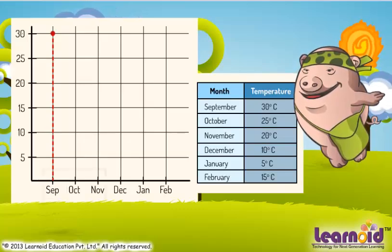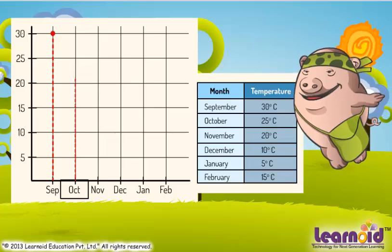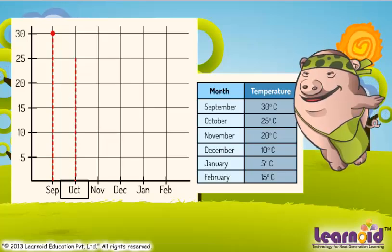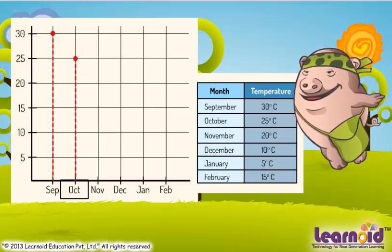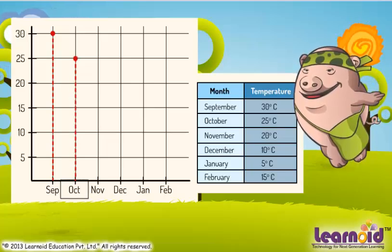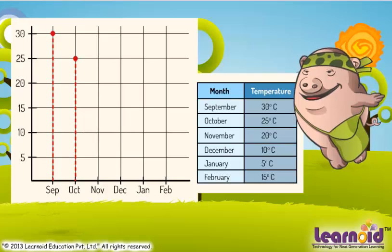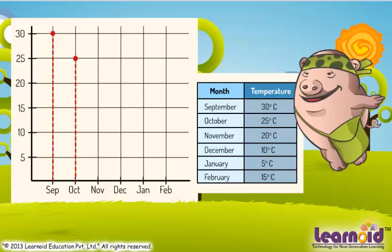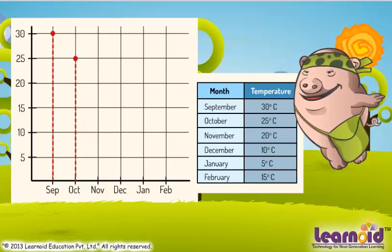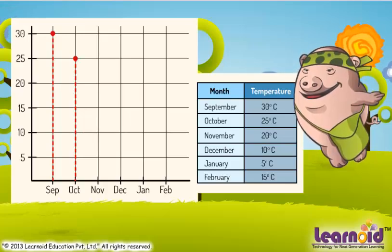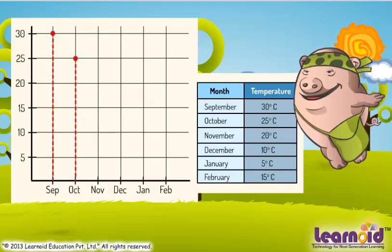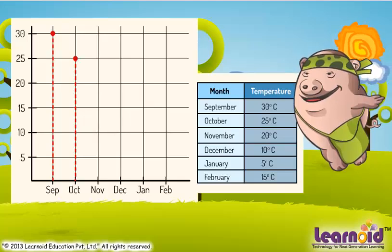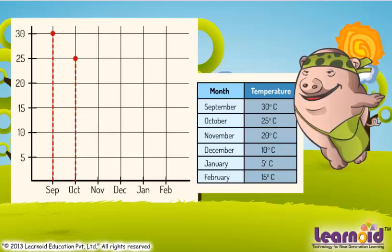For October, similarly locate 25 by moving vertically up. For all months on the horizontal axis, we will mark each point vertically as per the table.